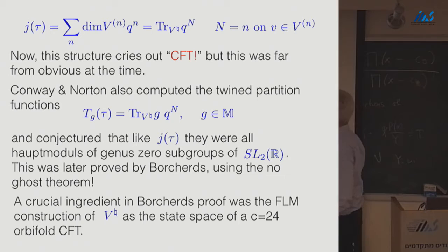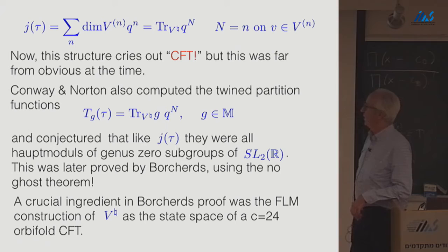So, j of tau would then be the sum of the dimensions of these vector spaces, or you could say it's a trace over this infinite dimensional vector space. And when we see something like this, an infinite q expansion, we'd say, well, that looks like it might be a partition function of a conformal field theory. But, of course, at the time that they were doing this, conformal field theory was not really understood.